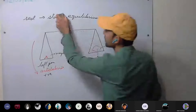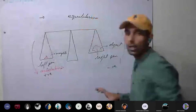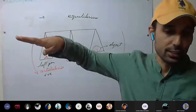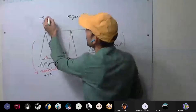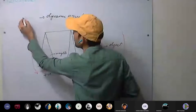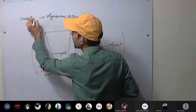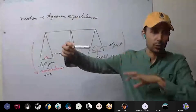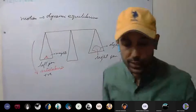Next, we discuss dynamic equilibrium. The body is in motion and remains in motion — no change in its motion. Then the body is said to be in dynamic equilibrium. For example, body is in motion and remains in motion, no change in its motion.